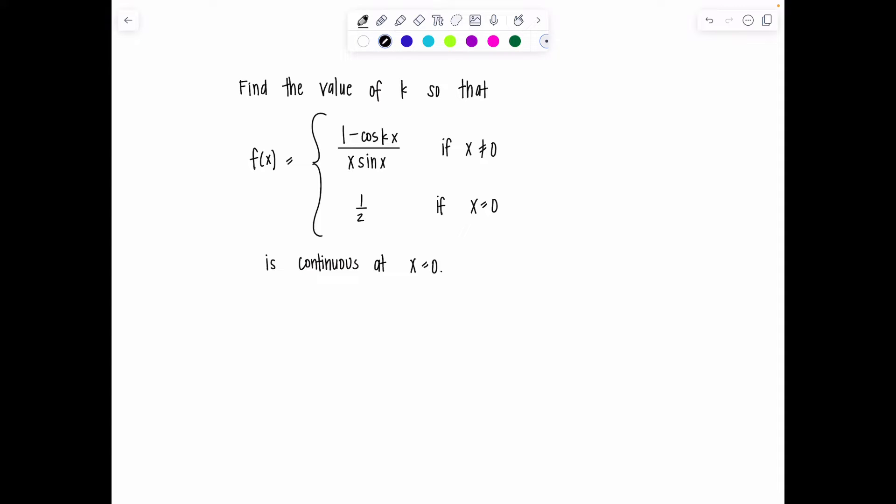First let's review what our definition of continuity is because that's going to help us answer this question. We want to find k so that this function is continuous at x equals 0. We say f(x) is continuous at x equals 0 if the following three conditions are true.